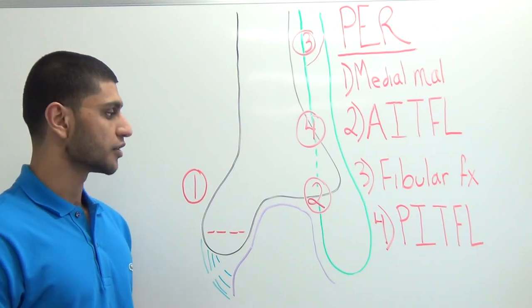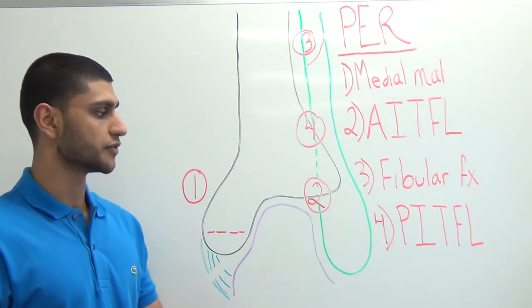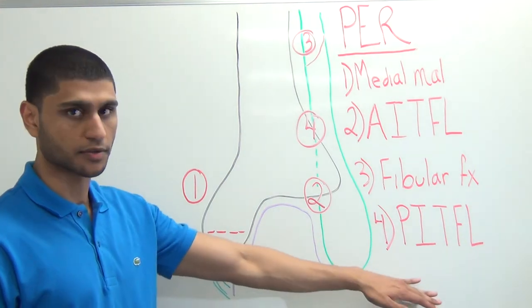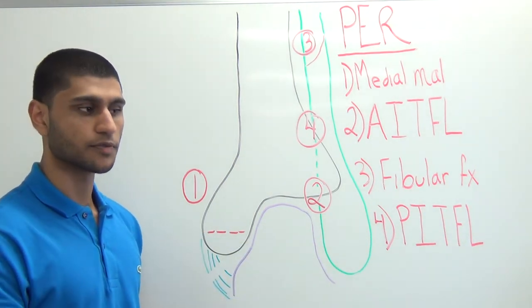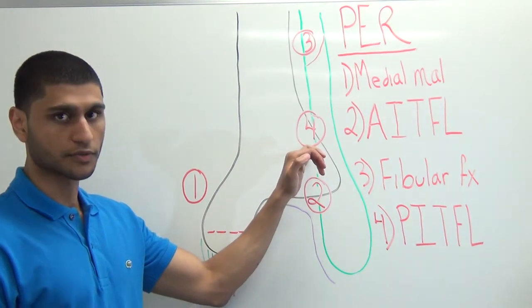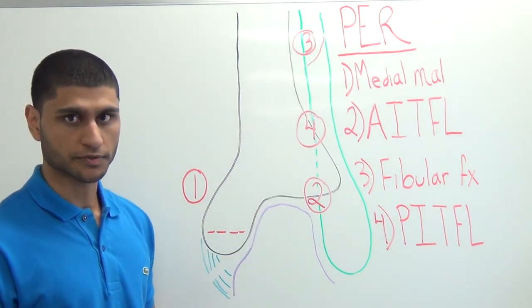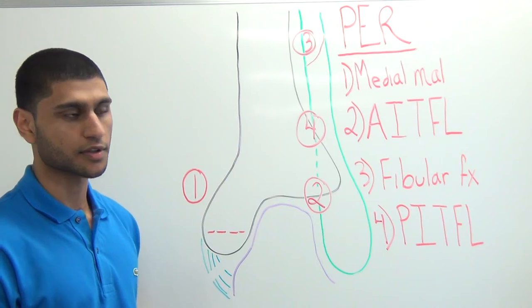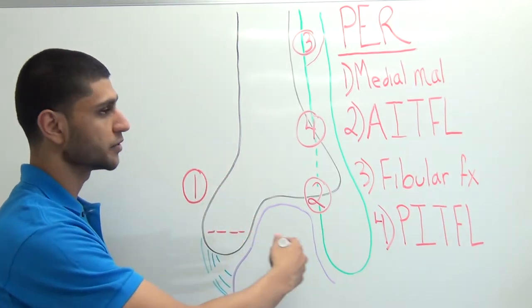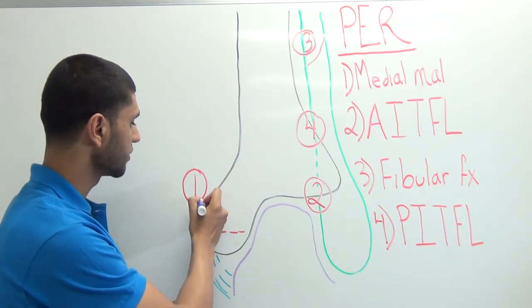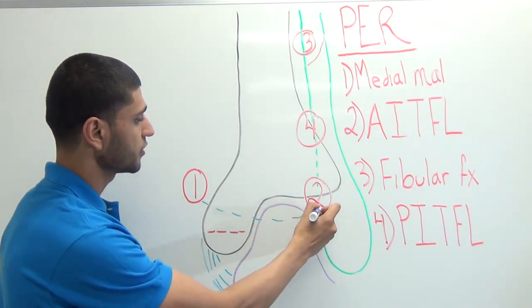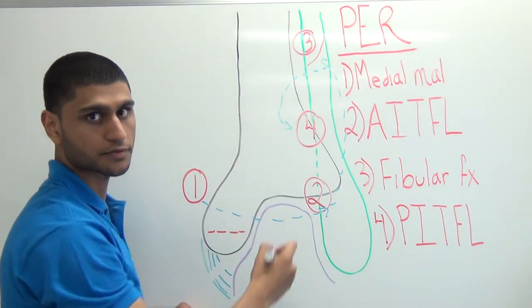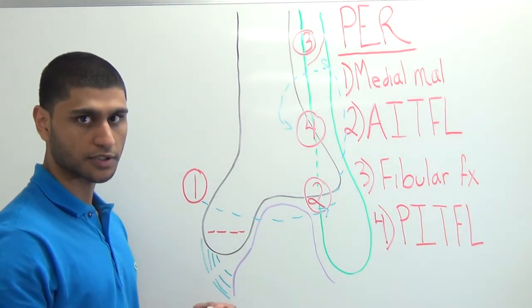In PER4, there are three possibilities, all involving injury or pull of the posterior inferior tibiofibular ligament. One is a tear of the ligament. Another is an avulsion fracture of the posterior tubercle of the tibia — the eponym for that is a Volkmann's fracture. The third possibility is a combination of an avulsion fracture and a tear of the ligament. At this point we've completed a full circle around the ankle joint — medially, then anterior, then lateral, then posterior — making this a true ankle diastasis.